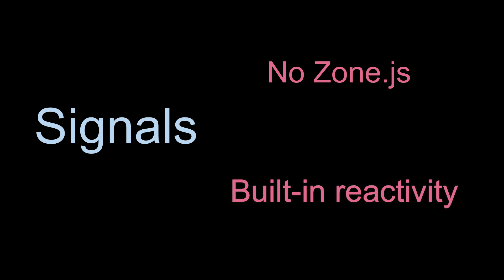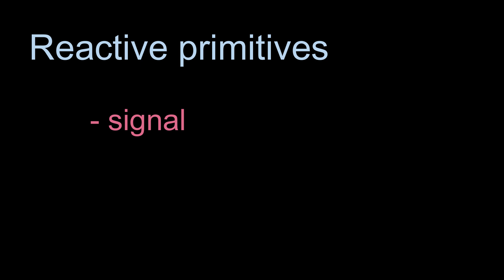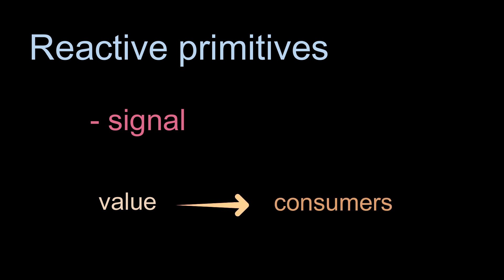Signals will ultimately lead to components which won't need zone.js for change detection because signals have reactivity built into them. So what are the three new reactive primitives? The first is a signal — the basic building block. It holds a value and also a notifier which can notify any consumers referring to that value. Whenever a signal's value changes, all the places it's used are notified — and only those places. This is the fine-grained reactivity the Angular team has been talking about. A signal has an initial value, you can set a value on it, and a signal value can also be read anywhere you need.